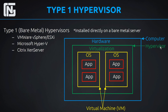So again, our type 1 hypervisor is installed directly on the bare metal hardware, and then within our virtualization layer we can add our virtual machines. Some other examples of type 1 hypervisors, other than VMware ESXi — which is now known as vSphere — are Microsoft Hyper-V and Citrix Zen Server. There are more, but these are the top three.